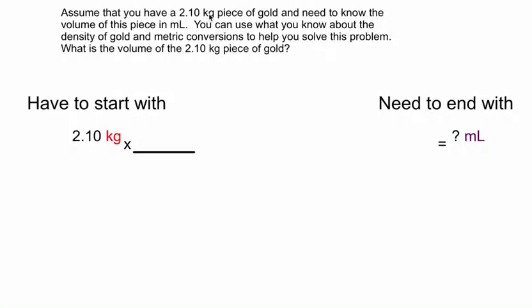So we have to convert from kilograms to milliliters. Now it says use what you know about the density of gold and metric conversions to help you solve this problem. So it's going to be a little bit more complex than the previous problems we've been working on, because I don't know a direct relationship between kilograms and milliliters. Not only do I have to use the density of gold, but I also have to use some metric conversions to get from kilograms to milliliters.